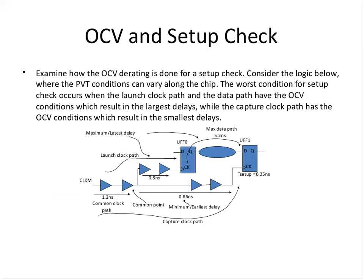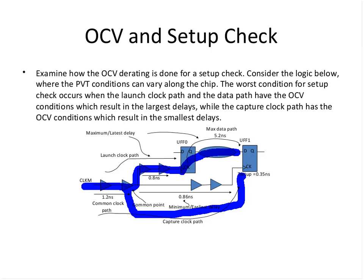OCV is conservative because process and environmental parameters may not be uniform across different portions of the chip. We apply a derate of 1.1 for maximum and 0.9 for minimum. For the launch clock path in setup, PrimeTime multiplies the delay by 1.1. For the data path, it also multiplies by 1.1. For the capture clock path, it multiplies by 0.9, making the capture edge arrive earlier.